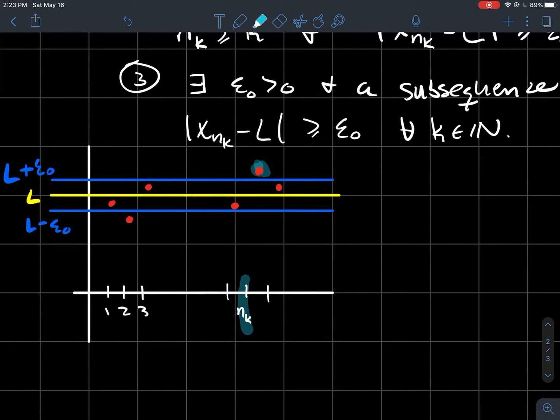that pops out of this epsilon naught window of L. So since you could always do that, again, my points do not get close to L.